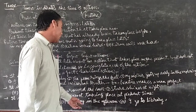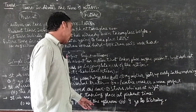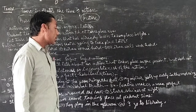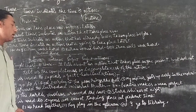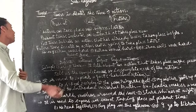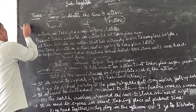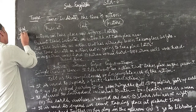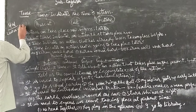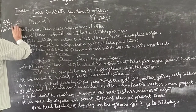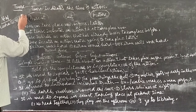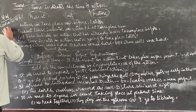They play in the afternoon. I go to the library. These sentences are examples of the simple present tense, used to describe actions happening at the same time or on a regular basis.